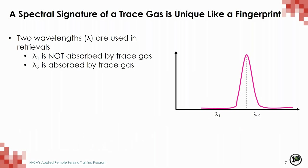Typically, retrieval algorithms use the difference between at least two wavelengths to retrieve a species of interest — one that exhibits absorption by the species, and one that does not. The right-hand plot shows a simple version of this concept schematically. The pink line represents absorption as a function of wavelength over a short wavelength range for an example species. Lambda-1 represents a wavelength that's not absorbed by the species, and lambda-2 represents one that is. This is a very simplified picture — most retrieval algorithms use multiple wavelengths.